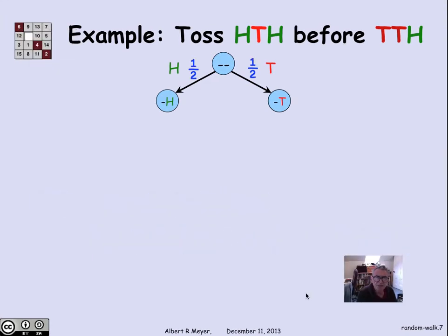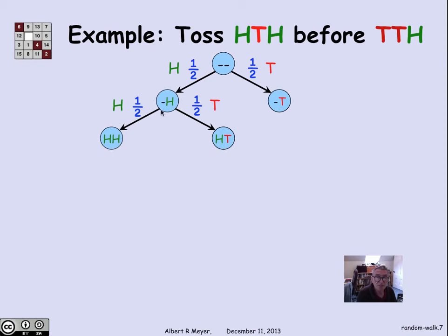So continuing in this way, let's expand more of the diagram. Suppose that I have tossed a head, and then after that I toss a head, and I go to state HH, or I toss a T, and I go to state HT. Here I'm just recording the previous two flips with the most recent one on the right.